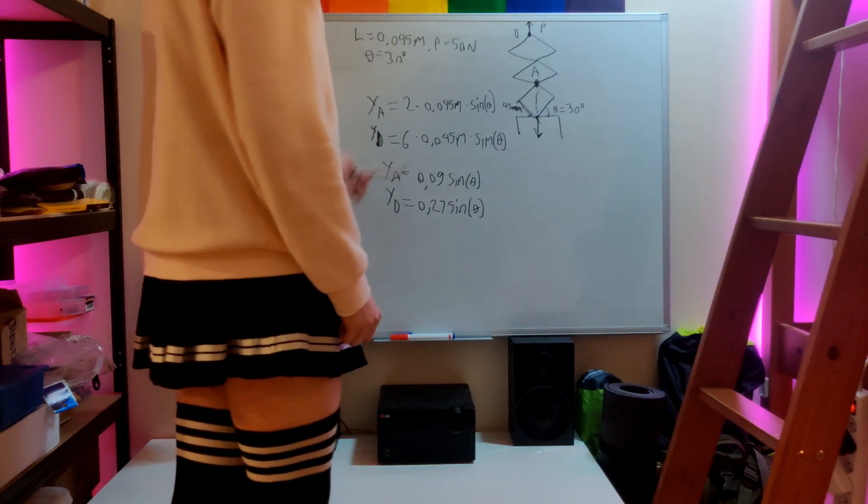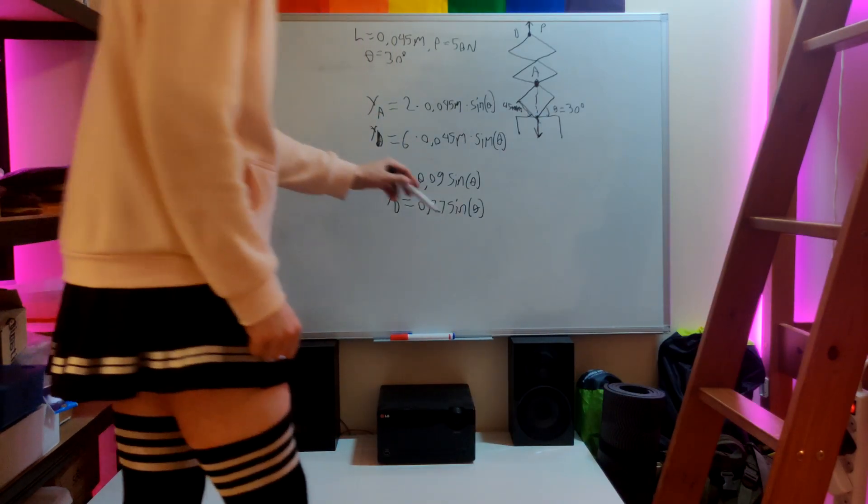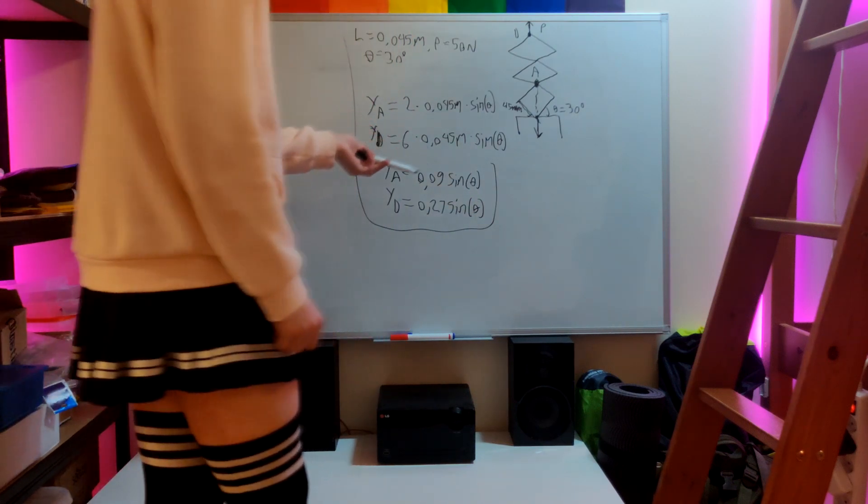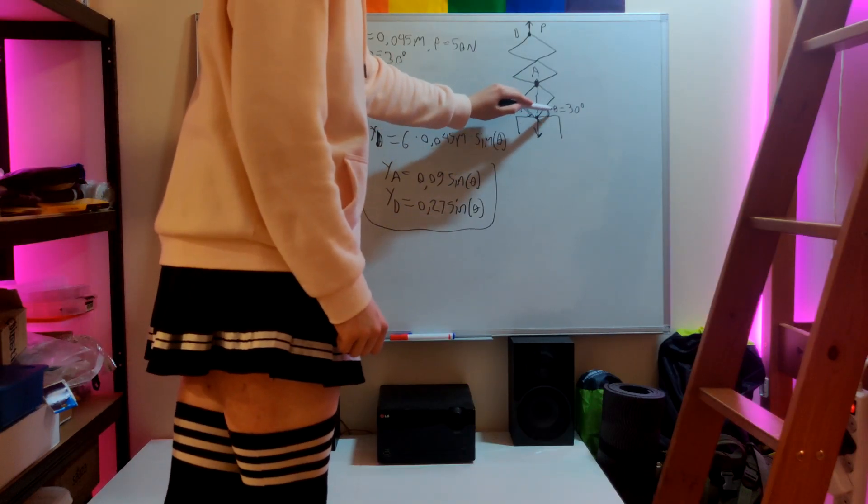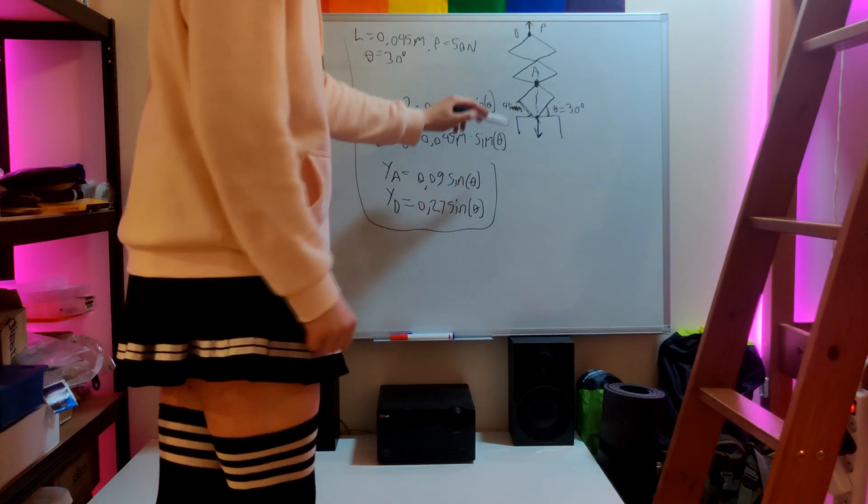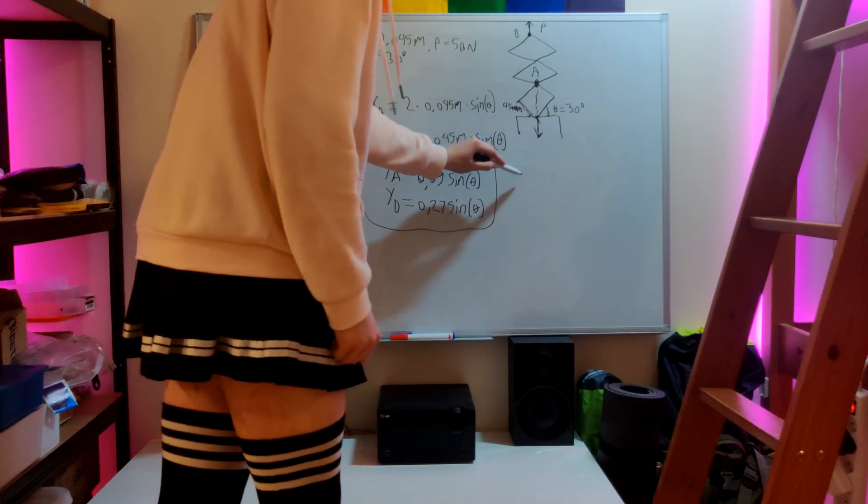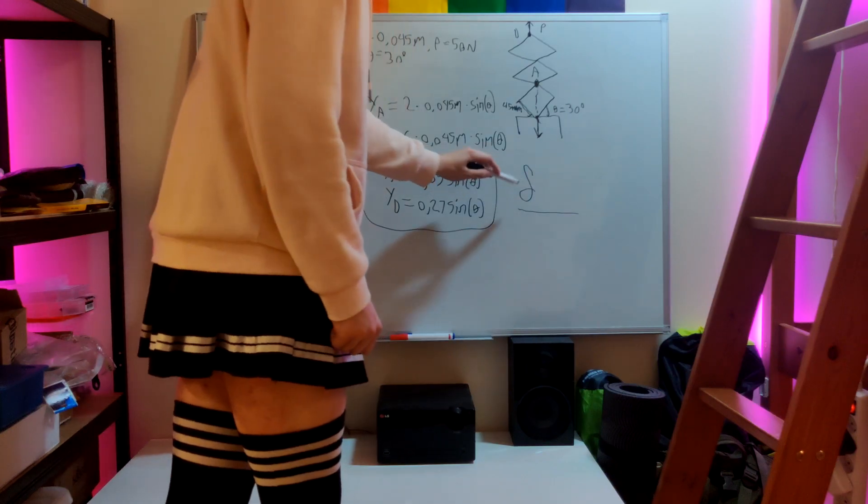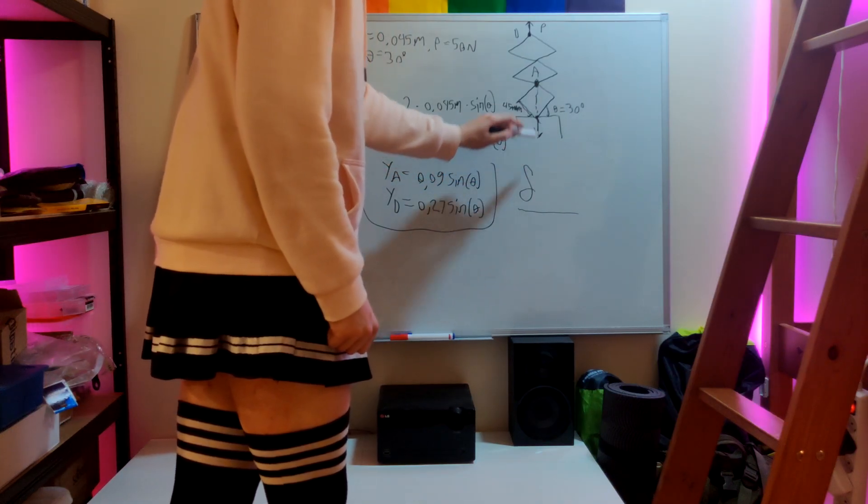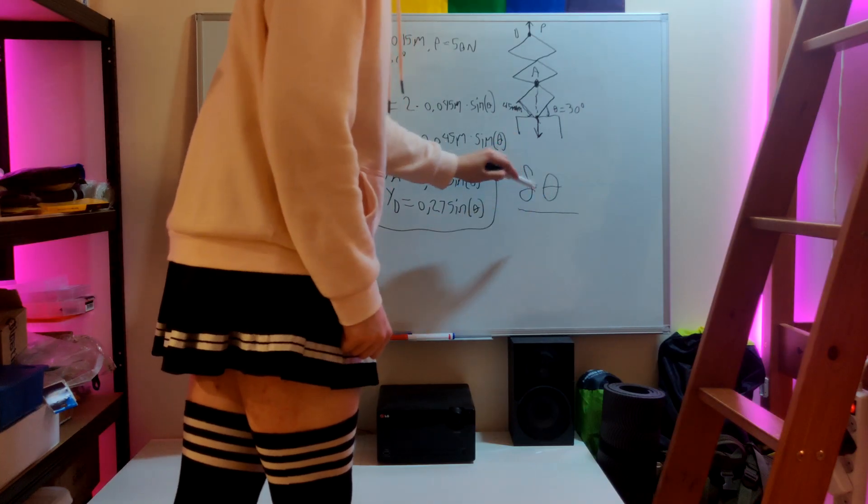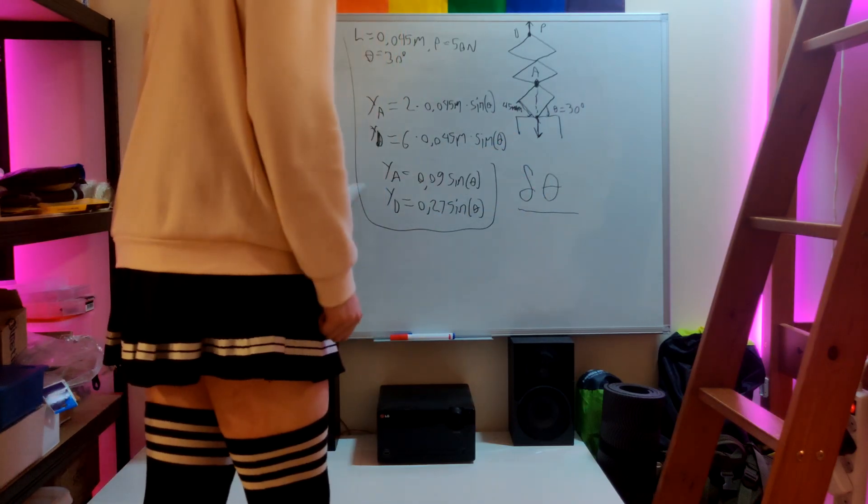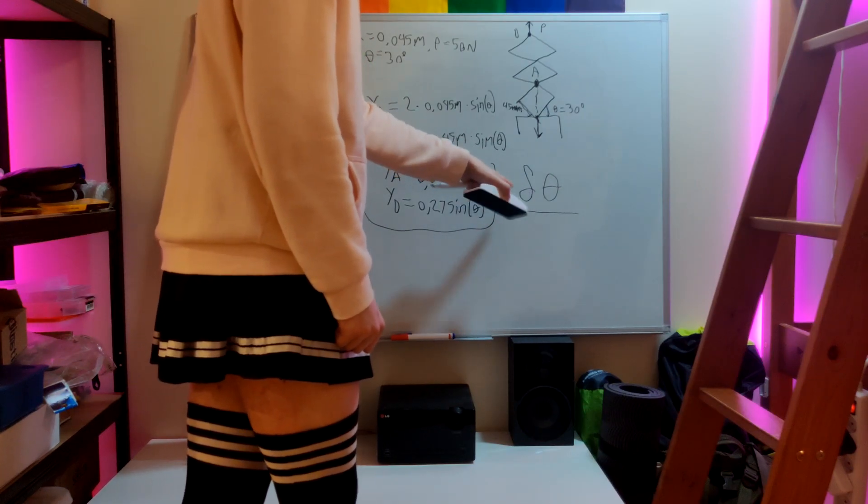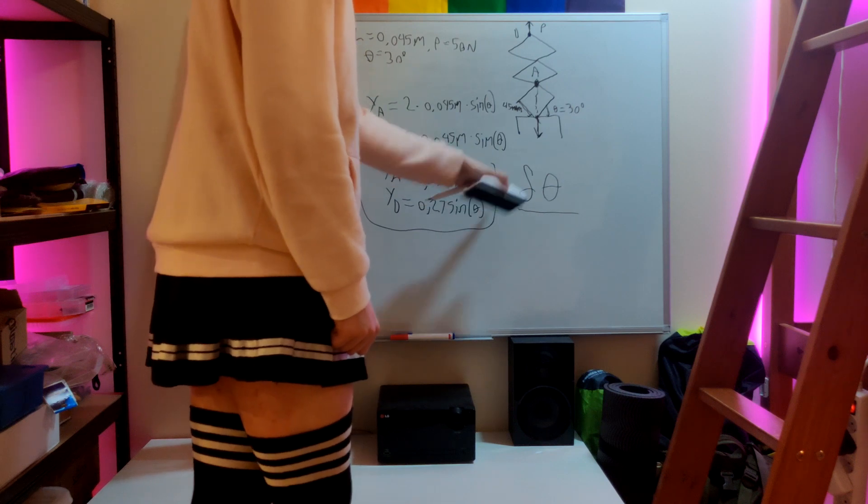And now we will basically imagine that we change this angle right here by an infinitely small amount, which is the notation for an infinitely small change in the angle. This is basically delta, but it's just a different symbol to signify that it's an infinitely small change.